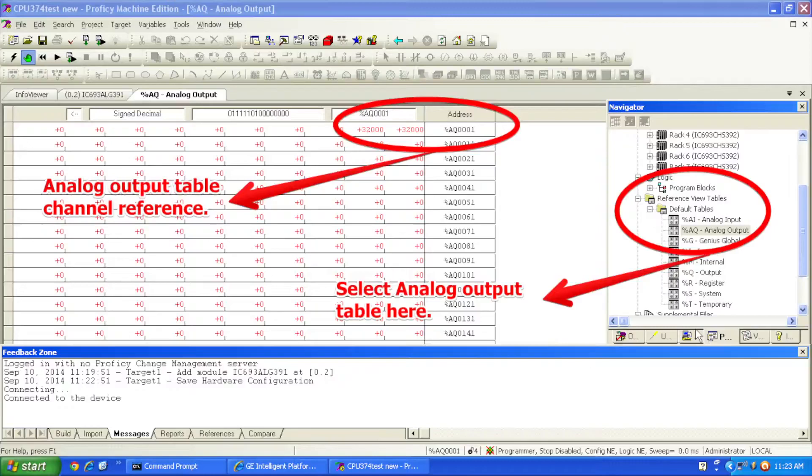You can double click on that or right click and open and your analog output table will pop up. The top right hand corner is the two addresses, AQ0001 and AQ0002, and what I'm going to do is put in the full value of 32,000 which should give me about 20 milliamps and I've done that.